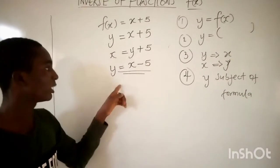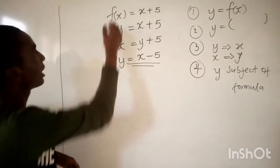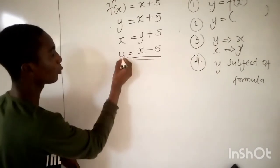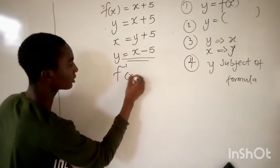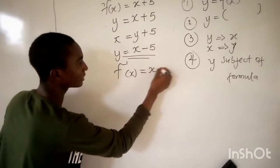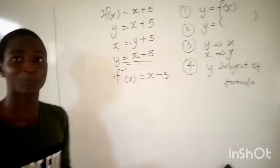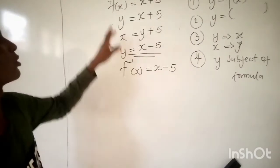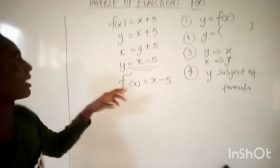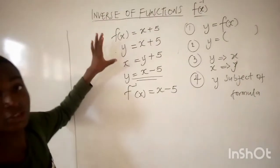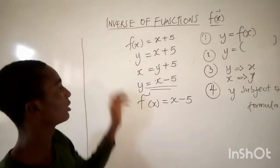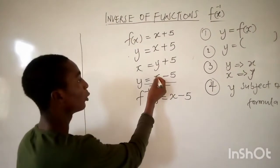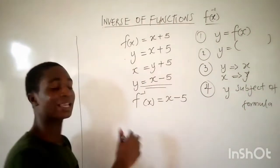The last thing you do is, since you made f(x) equal to y, then y is also f, so you write the inverse of f(x) is equal to x minus 5. Don't forget: first, substitute y in place of f(x). Next, replace x with y and y with x anywhere in the equation. Then make y the subject of formula.